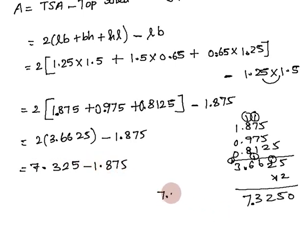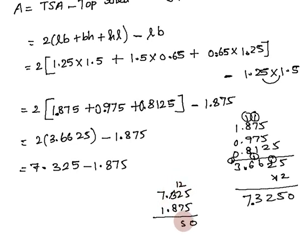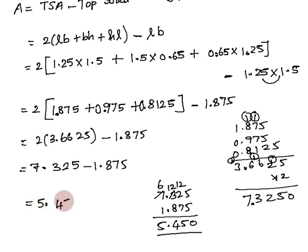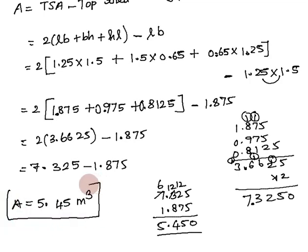Subtracting 1.875 from 7.325: borrowing where needed, 12−7=5, 12−8=4, 6−1=5. The result is 5.45. So the area of the sheet required for the box is 5.45 square meters.